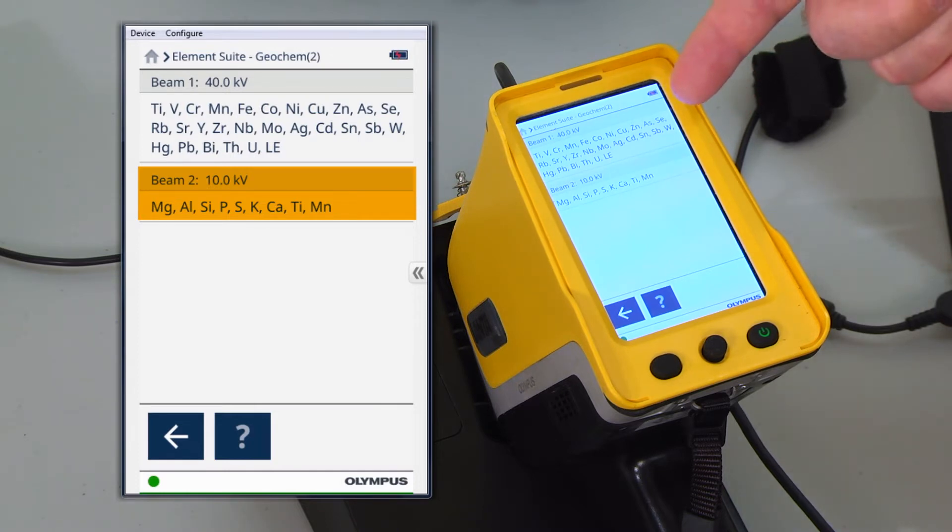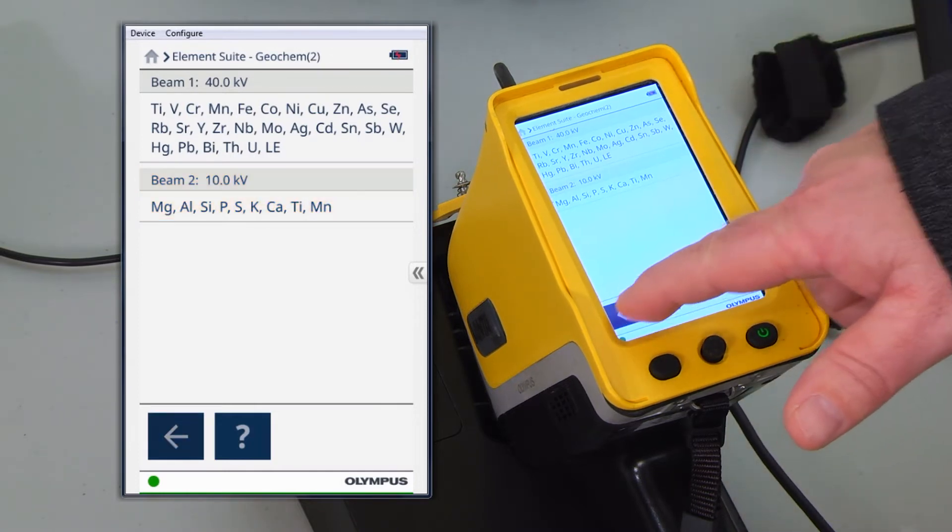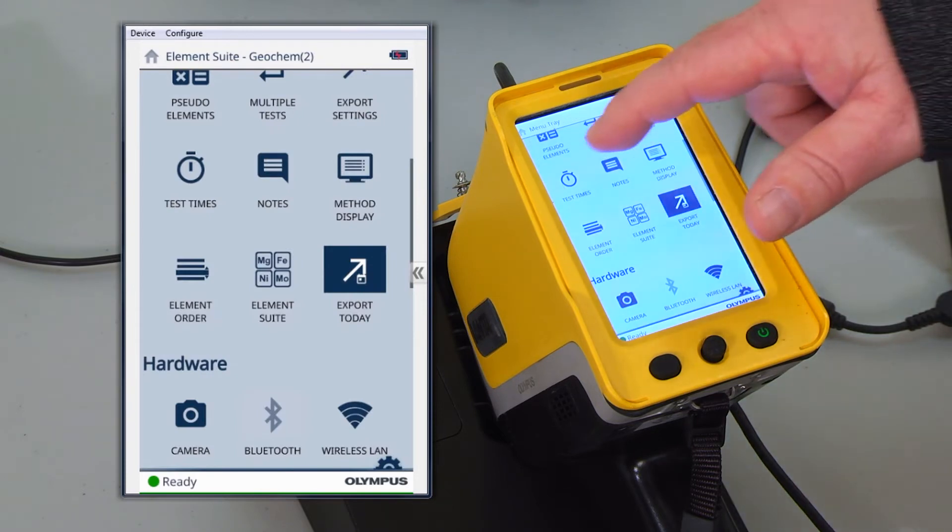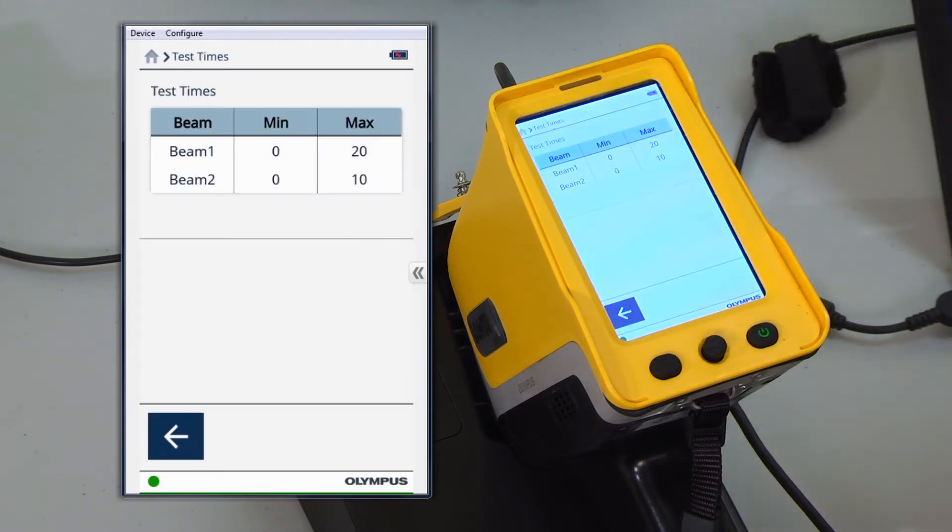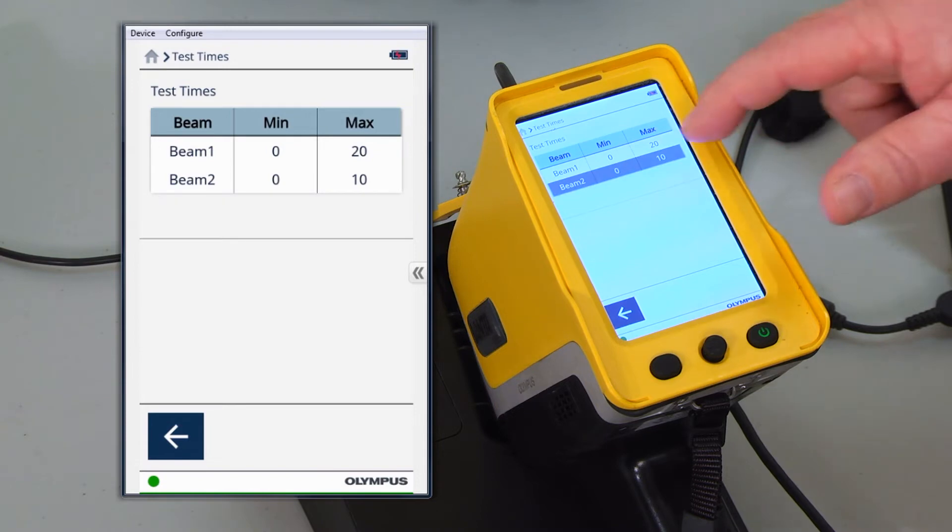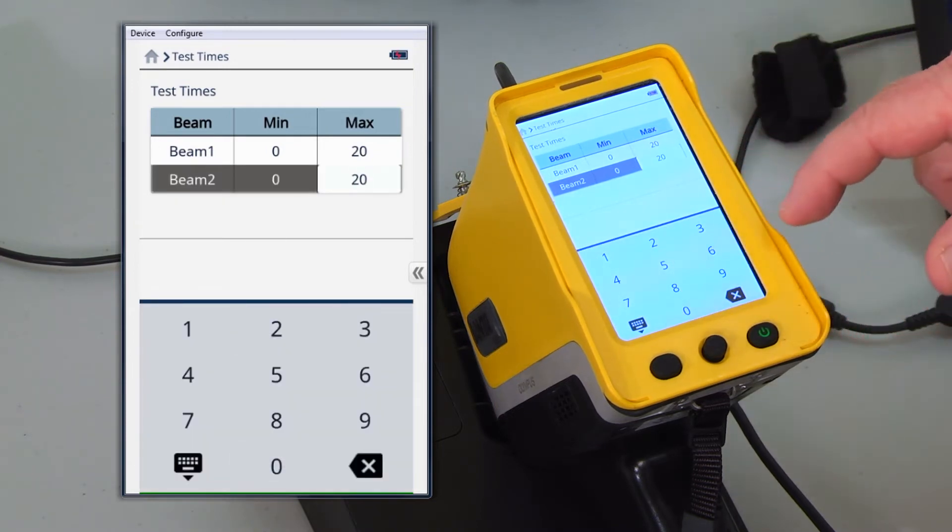So it's important you know which elements are optimised for which beam, so that if we need to make changes to the test time, we can simply do that by changing the test times in here.